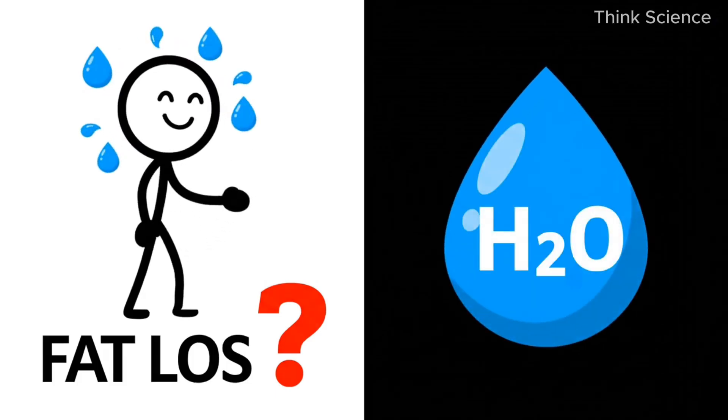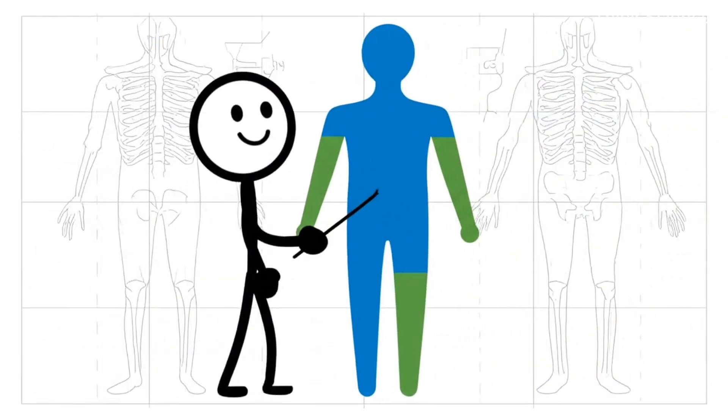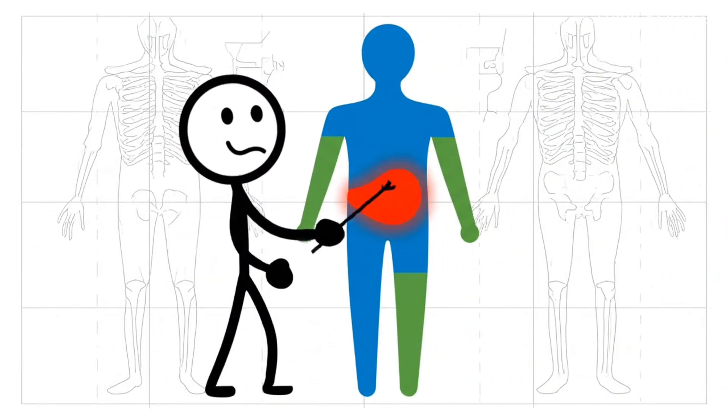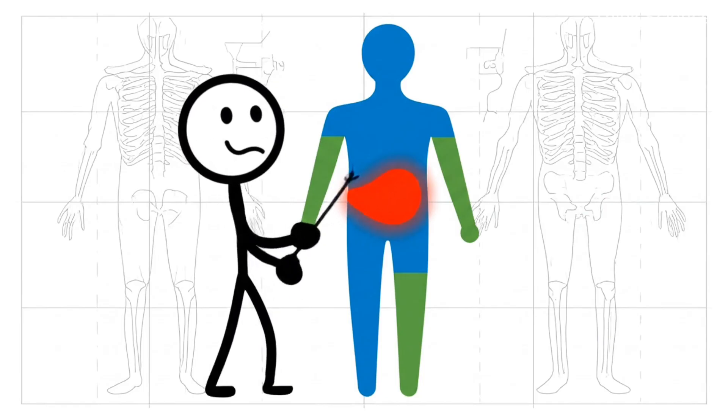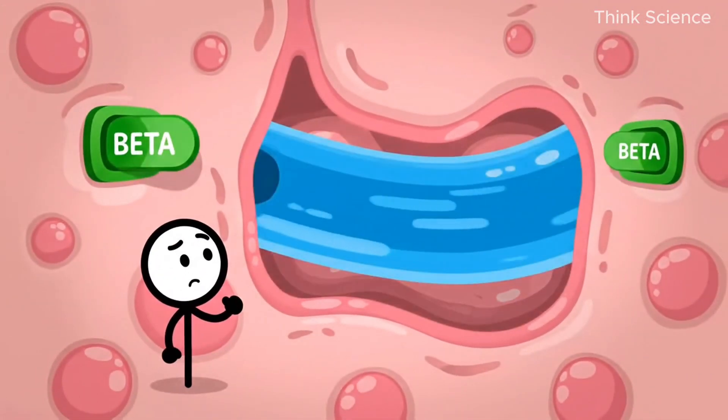Now, let's move to the next part of the story. Why fat refuses to leave the places you actually want it gone from, especially the belly. Some areas have better blood flow and more beta receptors, the ones that release fat quickly.